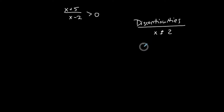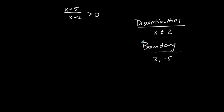The book calls them boundary points or boundary values — whatever, it doesn't really matter. To determine the boundaries of your interval representing the solution, you want to find not only the values where the denominator is zero, but also where the numerator is zero. So my boundary values are two and negative five: the denominator is zero at x equals two, and the numerator is zero at x equals negative five.